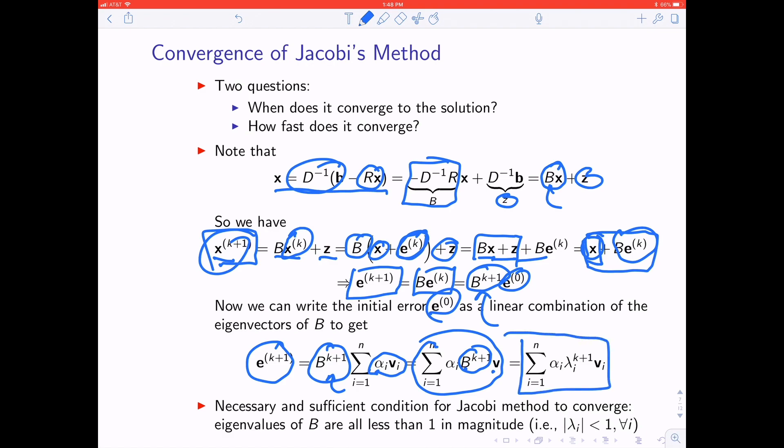Here's the final answer. What you need for this error to go to 0 as k gets large is you need these multipliers to be less than 1 in magnitude. If you're multiplying by something bigger than 1 in magnitude, the quantity is going to get bigger. It turns out we've shown that a necessary and sufficient condition for Jacobi to converge is that all the eigenvalues of the B matrix, which to remind you is minus D inverse times R, have to be all less than 1 in magnitude.